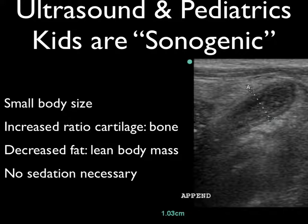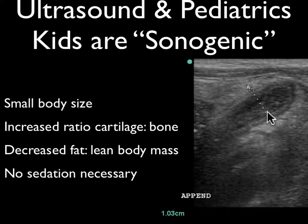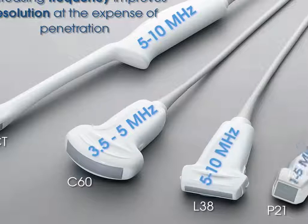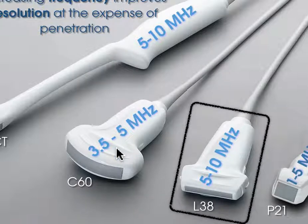Here is an example of a patient with appendicitis. This is the skin line up here, some muscle, and this is the appendix swollen right here — it's greater than six millimeters, wall-to-wall measuring 1.03 centimeters. That's what acute appendicitis looks like. Which probe do we use? Normally when we look in the abdomen on adults we use the lower-frequency probe, but on kids we get to use the high-frequency linear probe — my favorite probe, because it makes such pretty images.